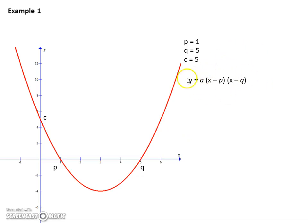All right, and we put in the values of p and q. Now we've got this value a here and we have to work that out. So we take the other piece of information c equals five and we put that in. When x equals zero, y equals five.